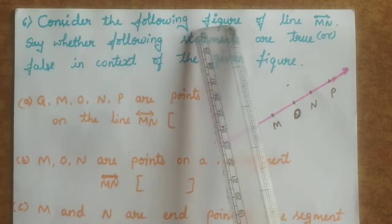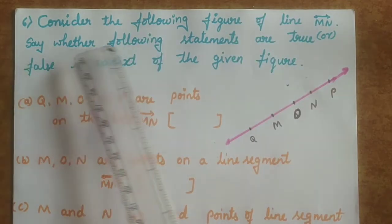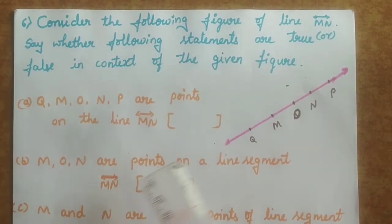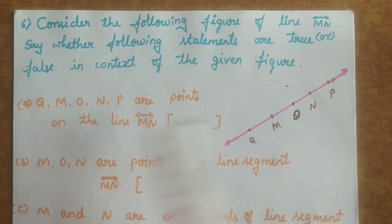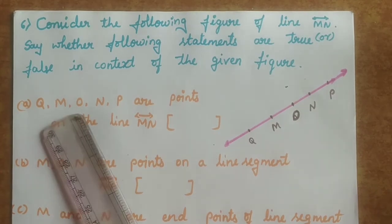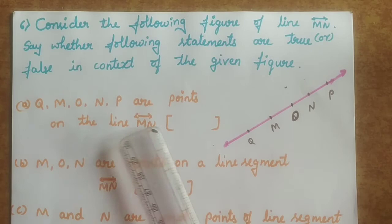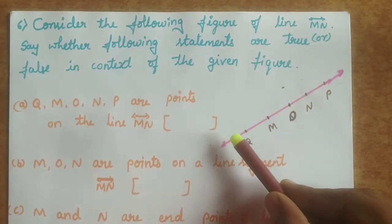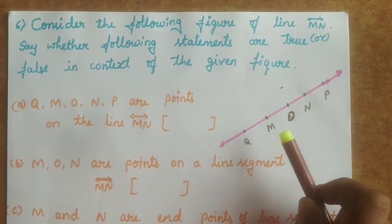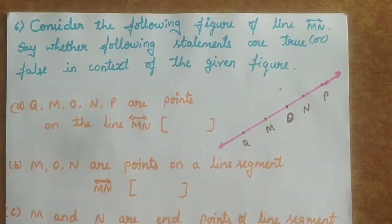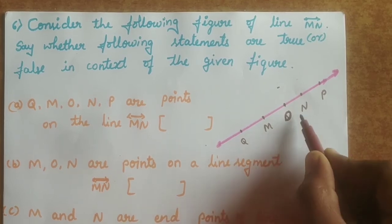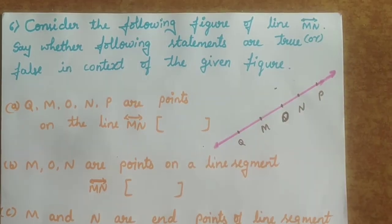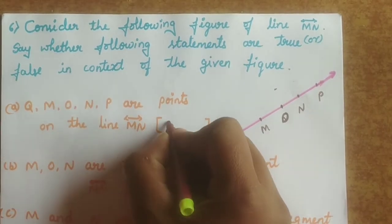Sixth question: consider the following figure of a line. Say whether the following statements are true or false. The given figure shows points Q, M, O, N, P on the line. Statement A: Q, M, O, N, P are points on the line — this statement is true, as all those points are on the line.